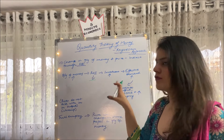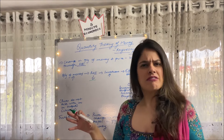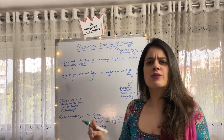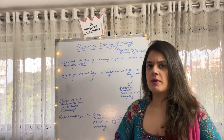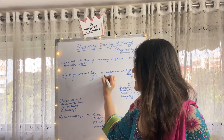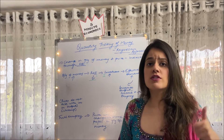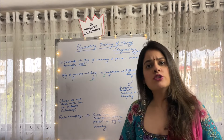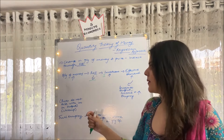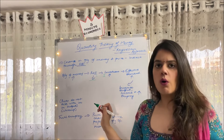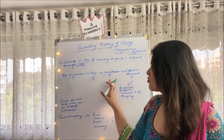Keynes says: when the quantity of money — that is money supply in the economy — increases, the first impact is on the rate of interest. With an increase in the quantity of money, ROI tends to fall. Now, ROI and investment hold an inverse relationship — small i (ROI) and capital I (investment) are inversely related. So when ROI falls, investment automatically increases.